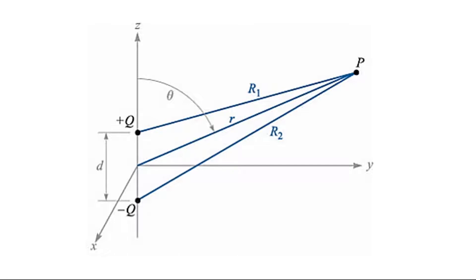Along the z-axis, the x and y coordinates are zero. The distance between the two point charges is d, so the distance from the origin to each charge is d/2. The coordinates for plus Q are (0, 0, d/2) and for minus Q are (0, 0, −d/2). Point P is described in spherical coordinates as (r, θ, φ). If we take φ = 90°, point P will lie in the y-z plane where x = 0.